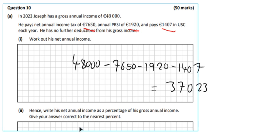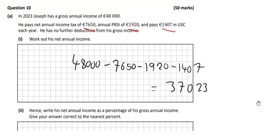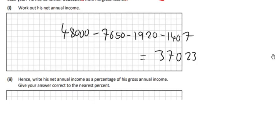And we should get 37,023. And that's all for that. Write his net annual income as a percentage of his gross annual income. So I'm just going to take the 37,023.